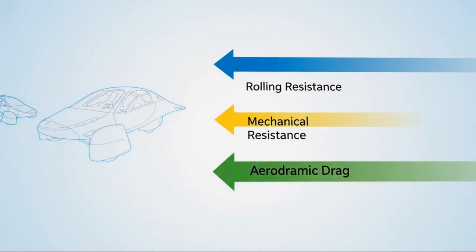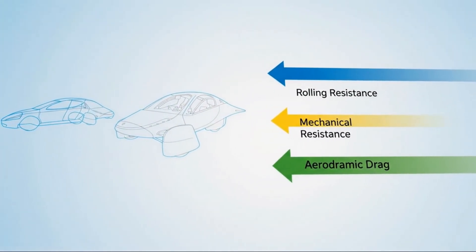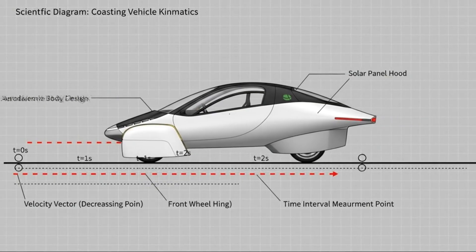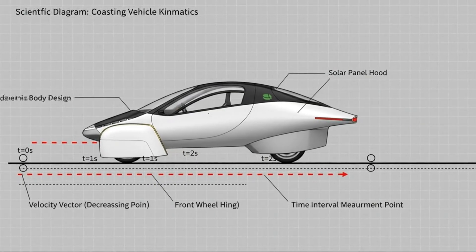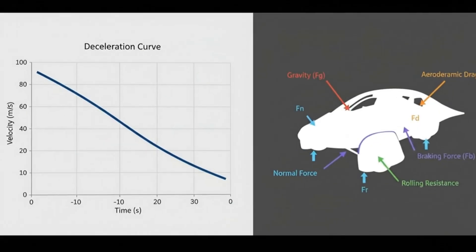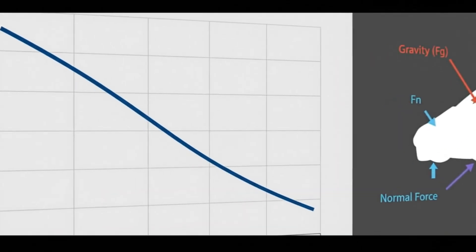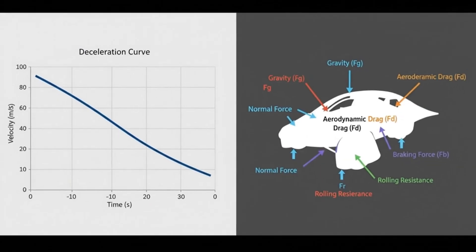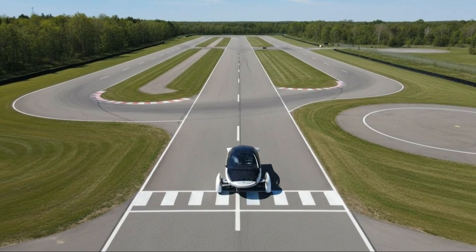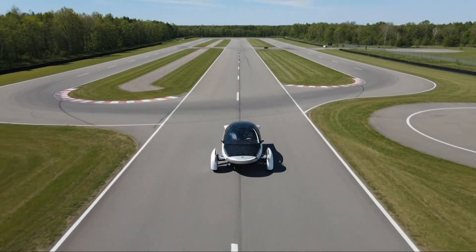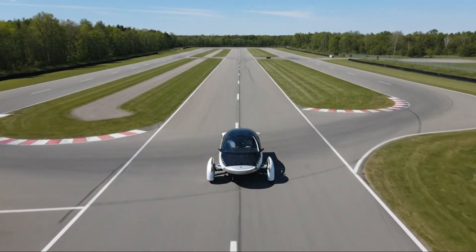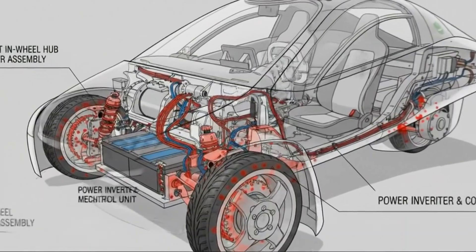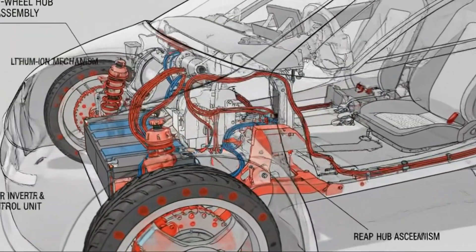Rolling resistance is another often overlooked factor, and here again, Aptera takes a different path. With only three wheels touching the road, friction is inherently reduced. Specially designed low-resistance tires further minimize energy losses. The aerodynamic enclosures around the wheels prevent turbulence from stealing momentum. This combination played a key role in the vehicle's remarkable coast-down performance, where it simply refused to slow down in the way most vehicles do.